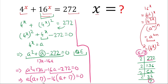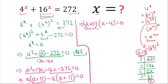Now taking (a plus 17) as a common factor, we get (a plus 17)(a minus 16) equals 0. Since the product of two factors is zero, we can write: a plus 17 equals 0, or a minus 16 equals 0. From the first equation, a equals minus 17.